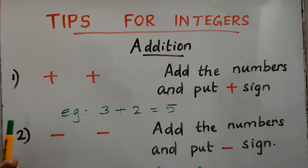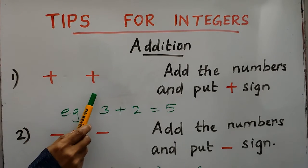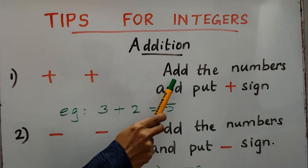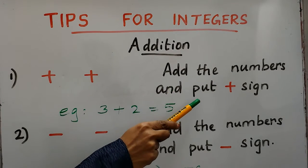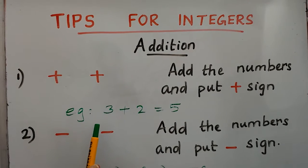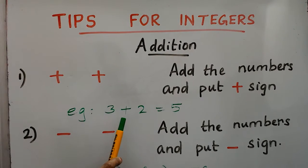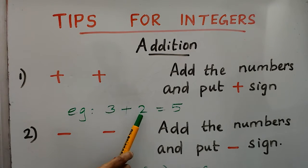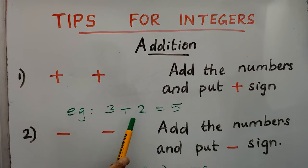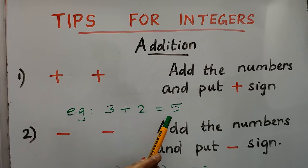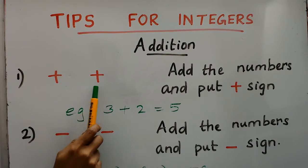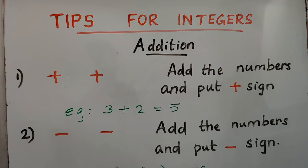If two numbers are positive, then add the numbers and put positive sign. For example, 3 plus 2 — both 3 and 2 are positive numbers. So add the numbers: 3 plus 2 is 5. Both numbers are positive, so answer is positive.